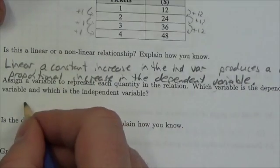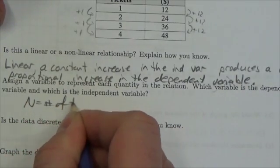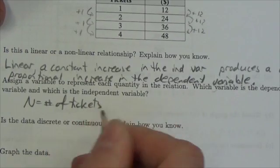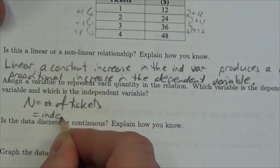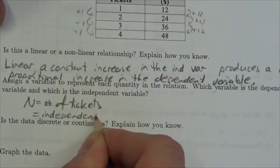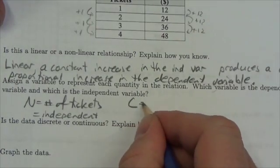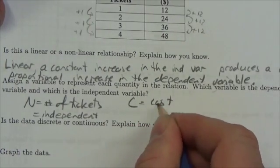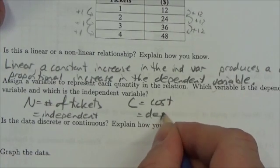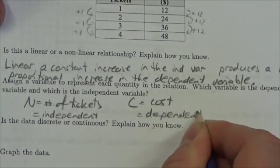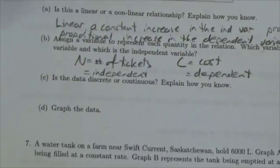Let's just say we'll let N be the number of tickets, and we've already seen that this is going to be the independent variable, and let's say C is going to be equal to the cost, and we've already established that this would be dependent. Now let's look at the next one.